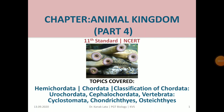Good morning friends. Today I am here with the 4th part of Animal Kingdom of 11th standard. In this session, we are going to discuss Hemichordata, Chordata, classification of Chordata — that is Urochordata, Cephalochordata and Vertebrata. In Vertebrata, we are going to discuss Cyclostomata, Chondrichthyes and Osteichthyes. So let us start the session.